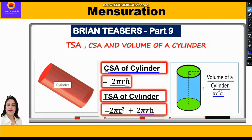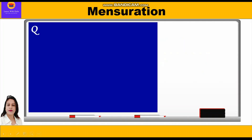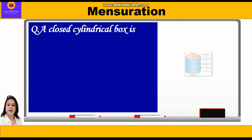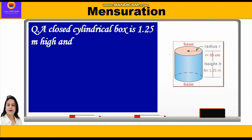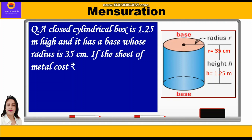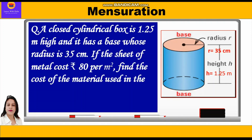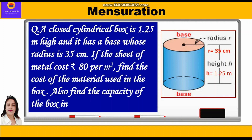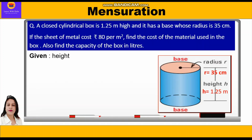Now let's start with the question. A closed cylindrical box is 1.25 meters high and has a base whose radius is 35 centimeters. If the sheet of metal costs rupees 80 per meter square, find the cost of the material used in the box and also find the capacity of the box in liters.